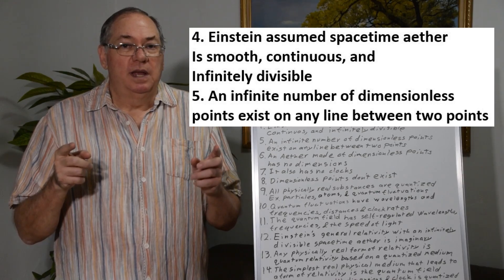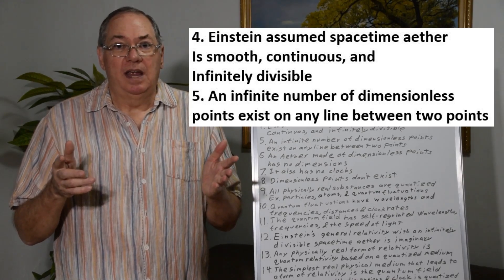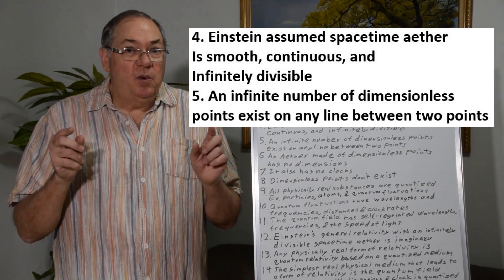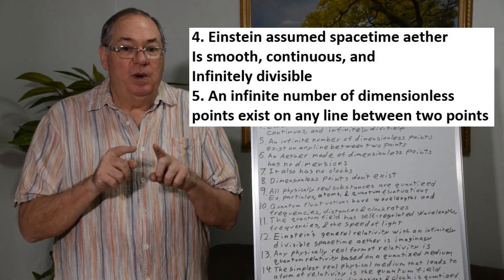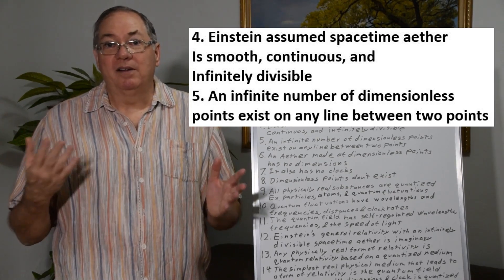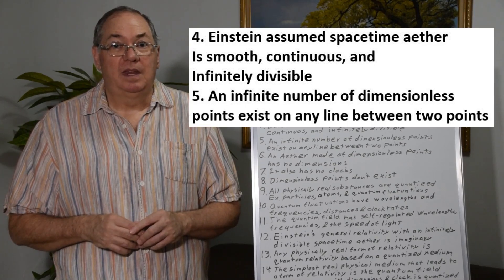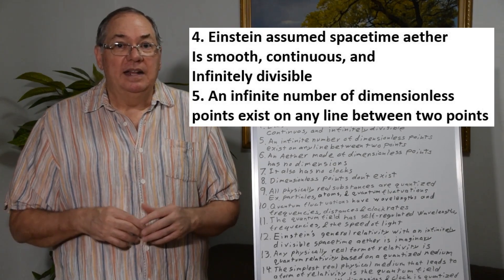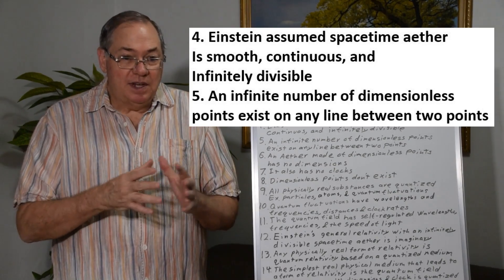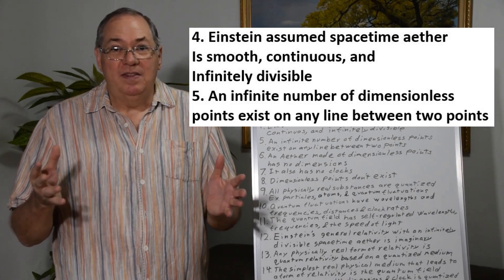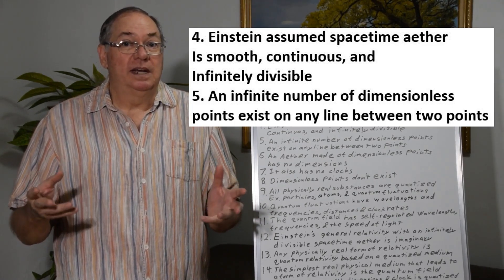And that's because points are dimensionless. And so between any two points you can fit more points no matter how close together they are. And that's why we have this continuous smooth theory, non-quantized theory.